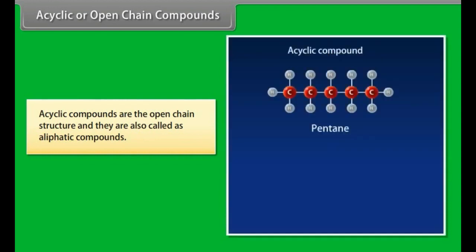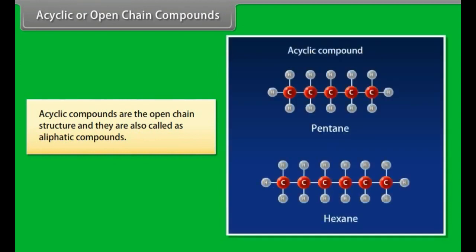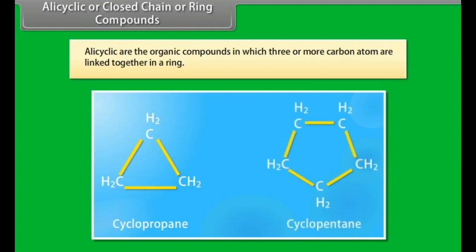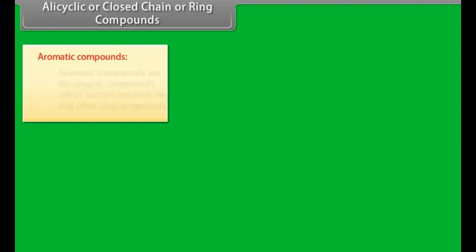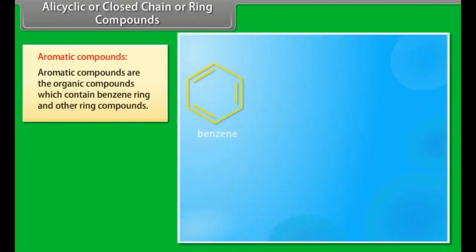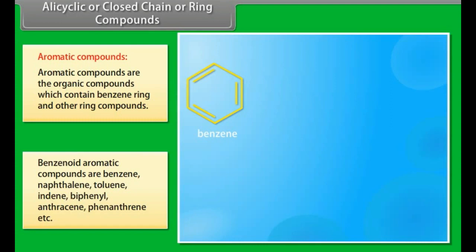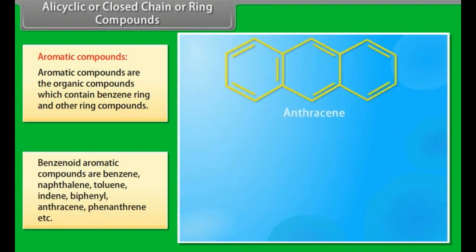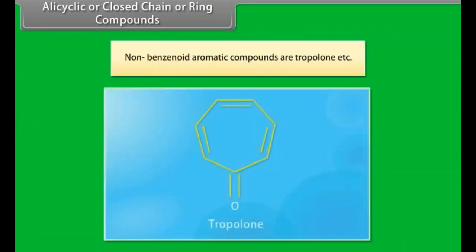Acyclic or open-chain compounds are open-chain structures, also called aliphatic compounds. Alicyclic or closed-chain or ring compounds are organic compounds in which three or more carbon atoms are linked together in a ring. Aromatic compounds are organic compounds which contain a benzene ring and other ring compounds. Benzenoid aromatic compounds include benzene, naphthalene, toluene, indene, biphenyl, anthracene, phenanthrene, etc. Non-benzenoid aromatic compounds include tropolone, etc.